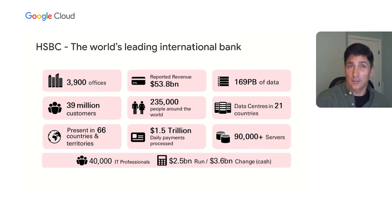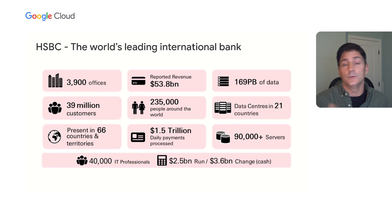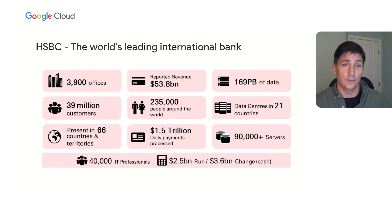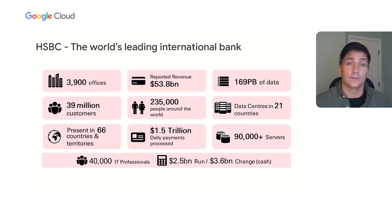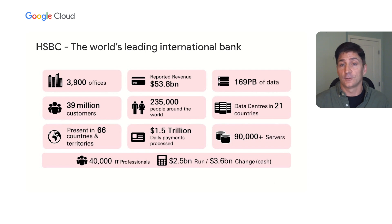On the multi-cloud side, we select the best of breed features for each CSP — BigQuery is a big one for Google. There's also regional availability. Certain applications have to go into multiple regions, but a provider like Google may not have a presence in China or near certain other regions, so we have to go multi-cloud where it makes sense.